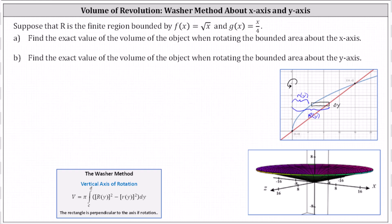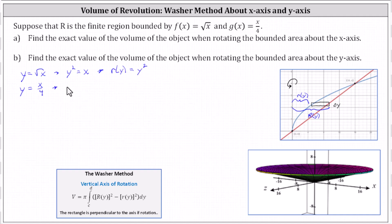We need big R and little r as functions of y. Writing f(x) equals square root of x as y equals square root of x, and squaring both sides gives y squared equals x — and since the square root function is the inner radius, little r(y) equals y squared. Writing g(x) equals x divided by four as y equals x divided by four and solving for x gives x equals 4y. Since the line gives us the outer radius, big R(y) equals 4y.